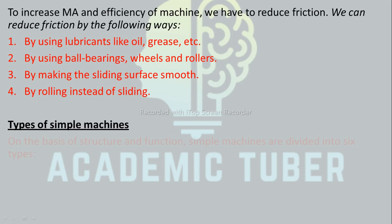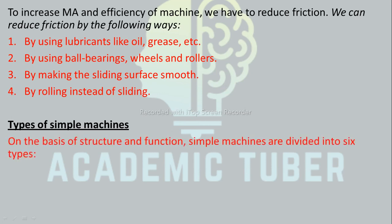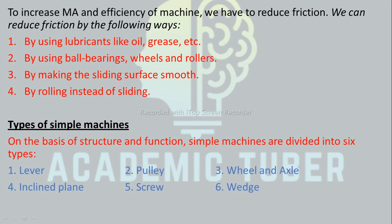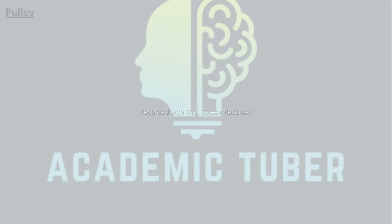Types of simple machines: on the basis of structure and function, simple machines are divided into six types — lever, pulley, wheel and axle, inclined plane, screw, and wedge.